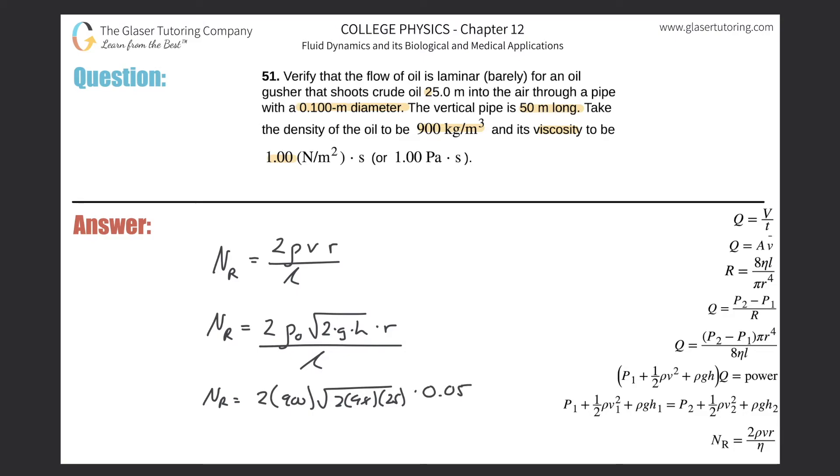So the Reynolds number here is going to be 2 times 900 times the square root of 2 times 9.8 times 25, then take that and multiply by 0.05, and we get about 1,992 or so.